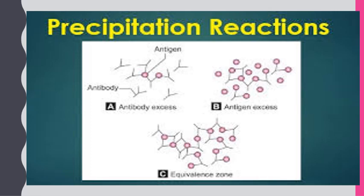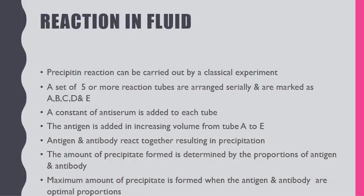This is the slide which shows the precipitation reaction. A represents antibody and B represents antigen. When they come together, they form a precipitation reaction. Precipitation reaction can take place in fluid and also in gel.